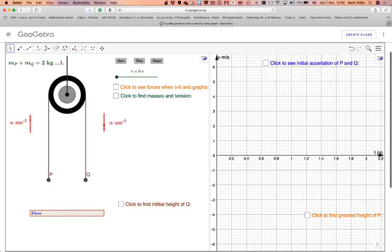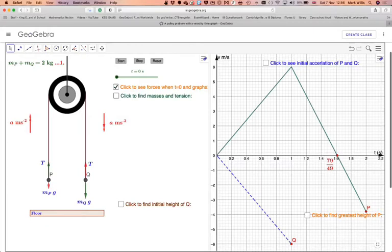and if we just click like that we have the forces. So the forces acting on this one will be T minus MPG is equal to MA and this one because it's going this way it will be MQG minus T equal to MA.